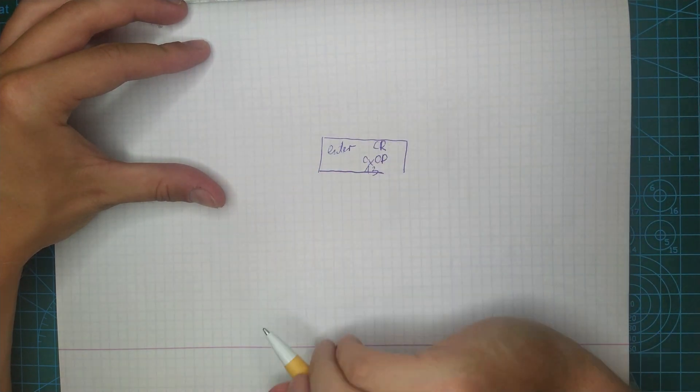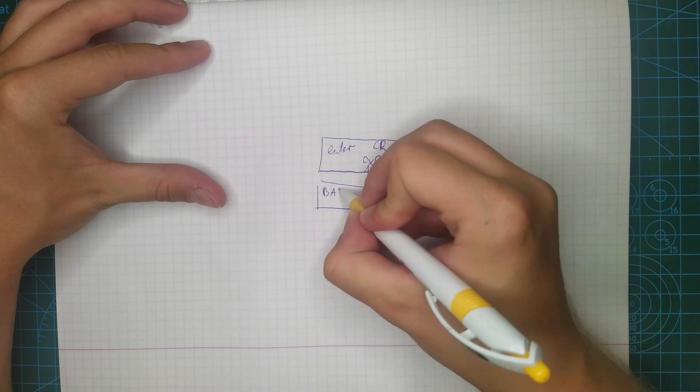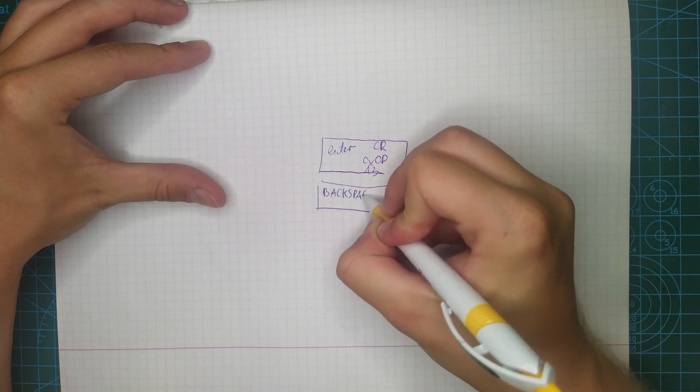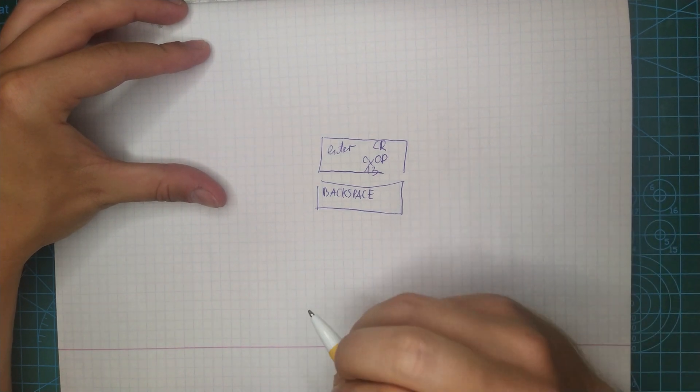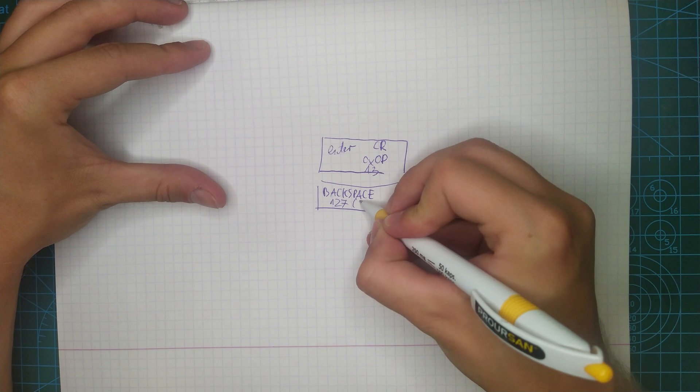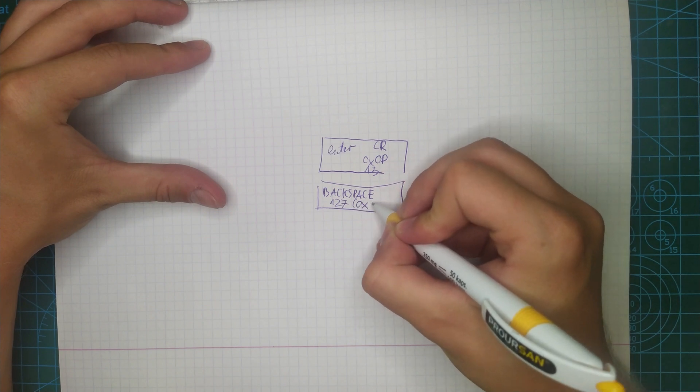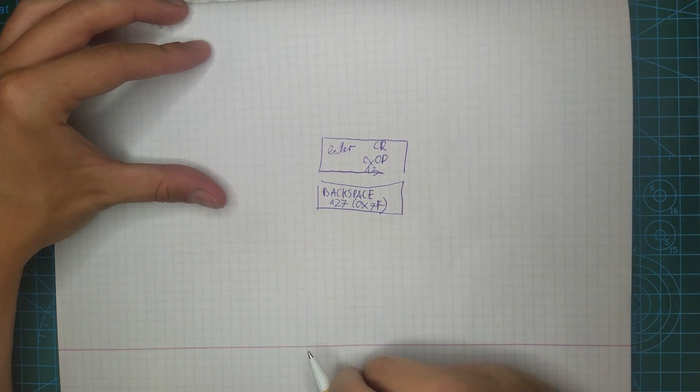The second key is backspace. The default behavior is to send delete, so 127 or in hex, 0x7F. We can change it to backspace, so code number 8, but it is not default in PuTTY.